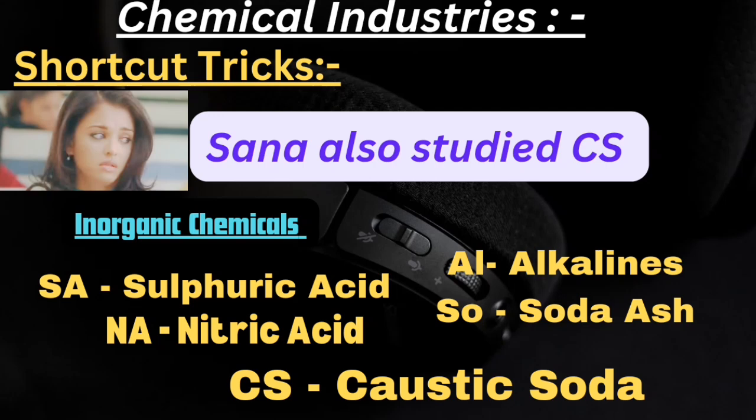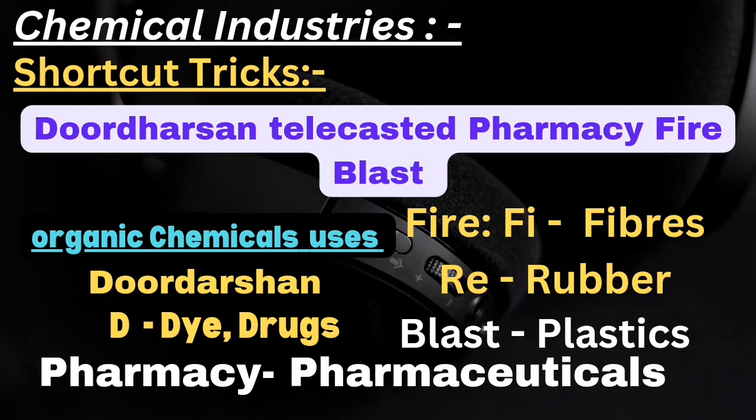The next shortcut is: 'Doordashen telecaster pharmacy fire blast.' DD represents dyes and drugs, pharmacy represents pharmaceuticals, FI represents fiber, R represents rubber, and blast rhymes with plaster - so plastics. Organic chemicals are used to manufacture dyes, drugs, pharmaceuticals, synthetic fibers, rubbers, and plastics.